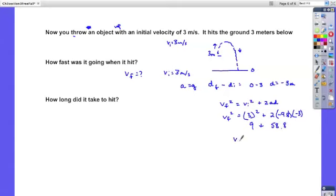So, that tells me that the square of the final velocity is 67.8. So, take the square root, and the final velocity is 8.23 meters per second.